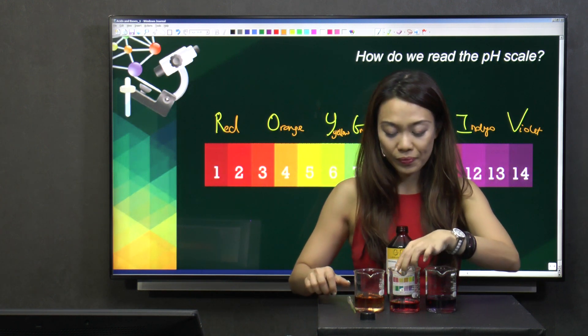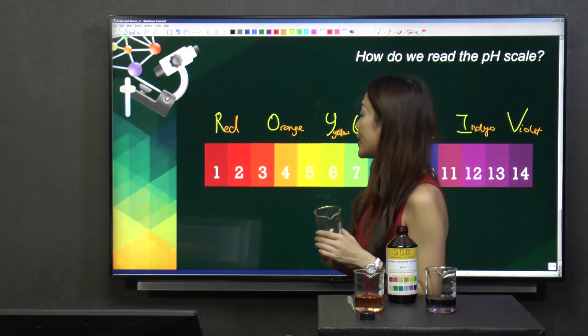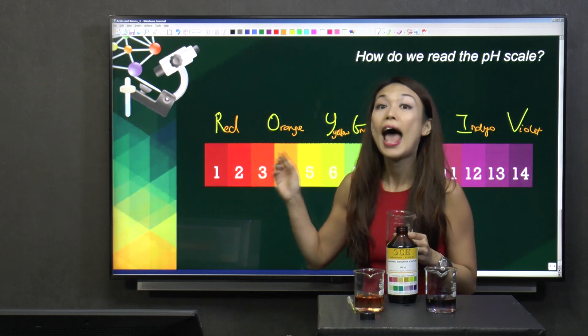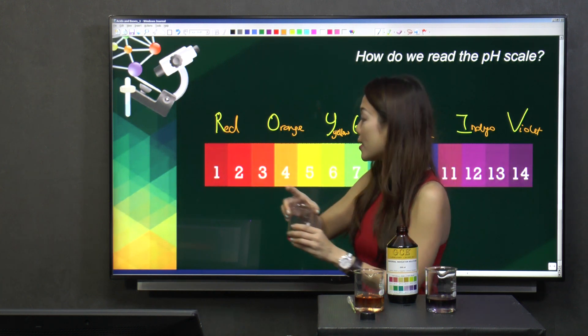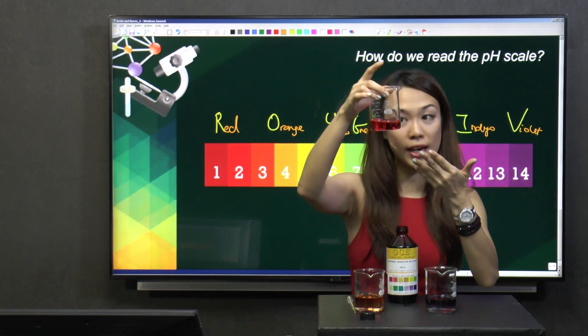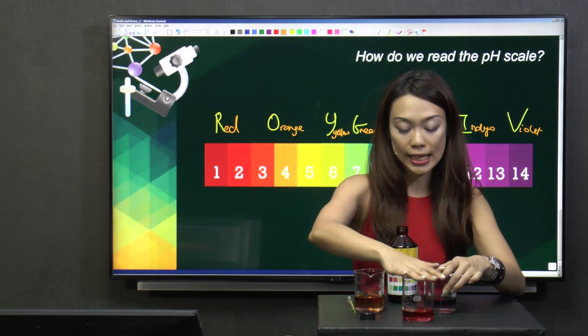Now, first of all, this is red in colour. So, using the universal indicator, what do you think this is? This is an acidic solution. Can you see the red? Wow. I hope the video captures this nicely, because from here, it looks really nice. And, this is red. Of course, it's acidic.